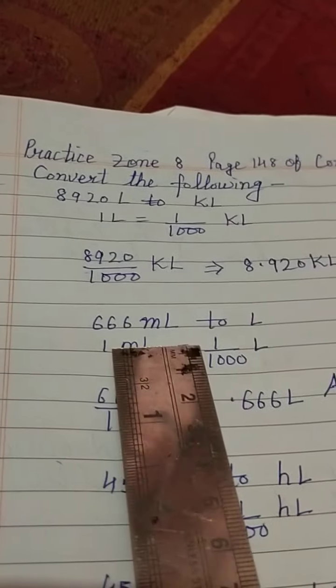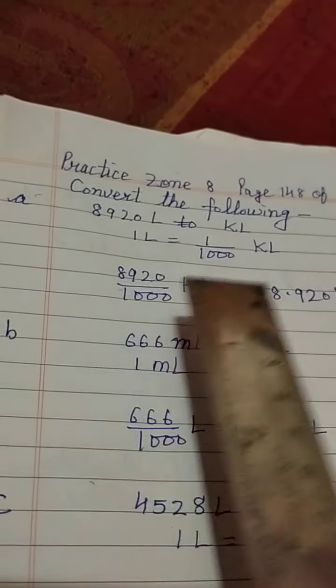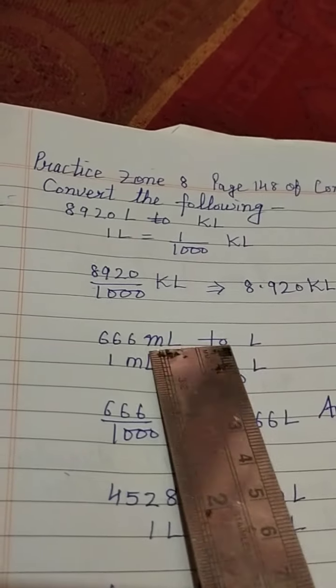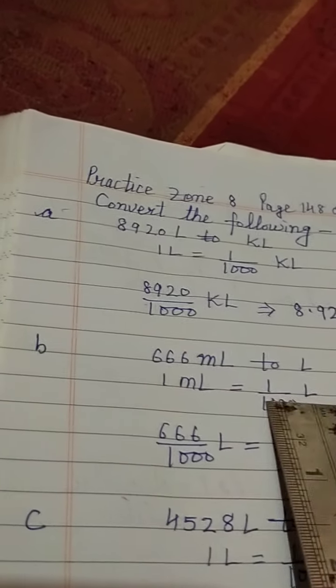Next question, part B: 666 millilitre to litre. Now liter se millilitre jaate hai then we are doing multiply, but millilitre to litre jaane hai, this is smaller unit, this is bigger unit. Smaller to bigger means divide, and we know that 1 millilitre is equal to 1 by 1000 litre.